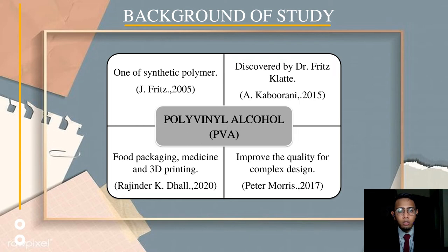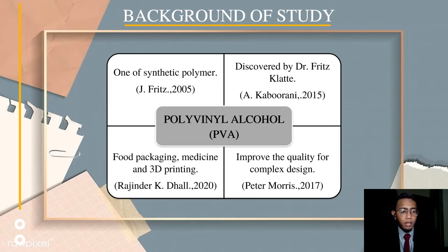This material was discovered by Dr. Fritz Glade in 1912 in Germany. PVA can also be used in the industries of food packaging, medicine, and 3D printing. In the 3D printing industry, the material is able to improve the quality of any complex design and is used as a support structure.